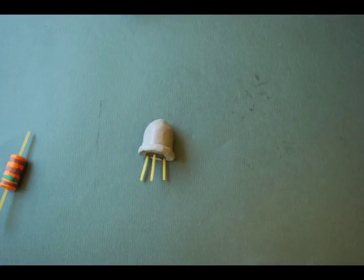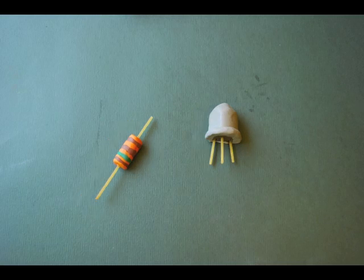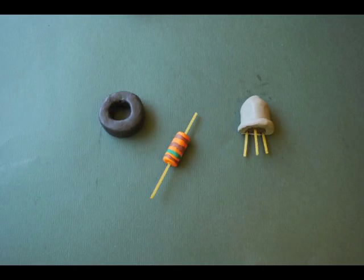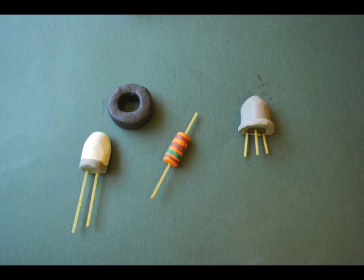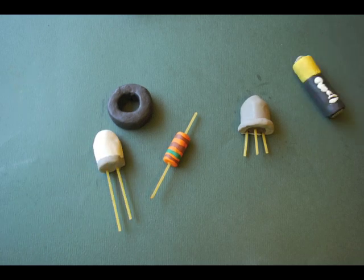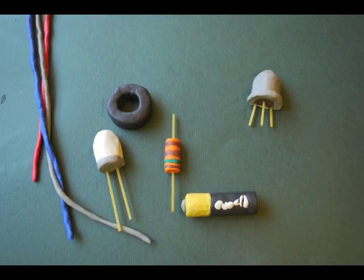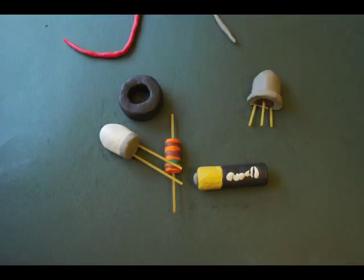We need a transistor, a resistor, a ferrite to create a magnetic field, an LED, a used battery, some wiring in different colors to connect the different parts, and that's it.